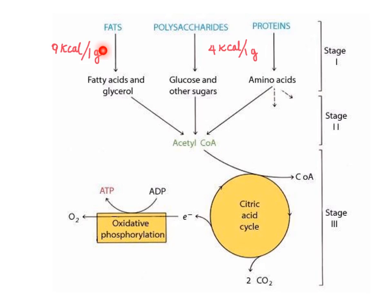In the first stage of catabolism, macromolecules are broken down to smaller molecules. The breakdown of glucose by glycolysis does not use molecular oxygen. In glycolysis, only a small fraction of ATP is made. Most of the ATP molecules formed from glucose are generated in aerobic conditions.